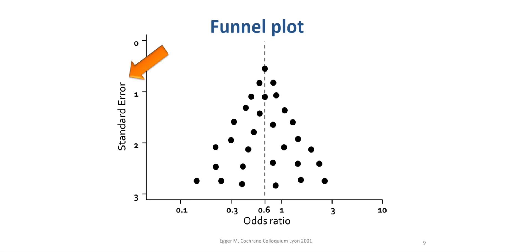A funnel plot shows the effect of an individual study, here represented by each single dot on the x-axis, plotted against a measure of precision on the y-axis. As a measure of precision, the standard error is frequently used. In earlier versions of the funnel plot, sample size has been frequently used.